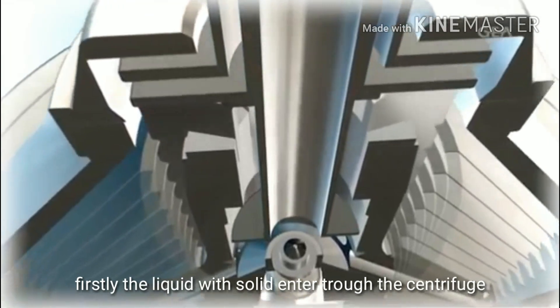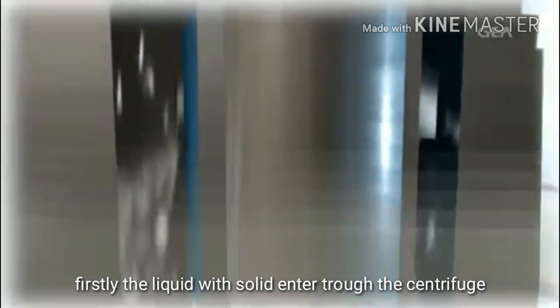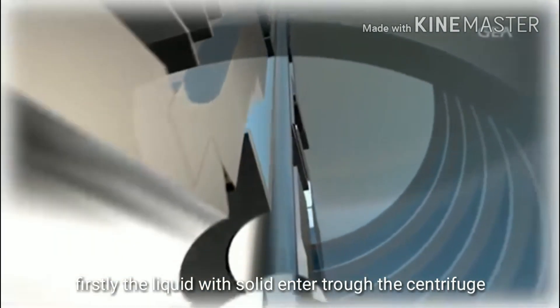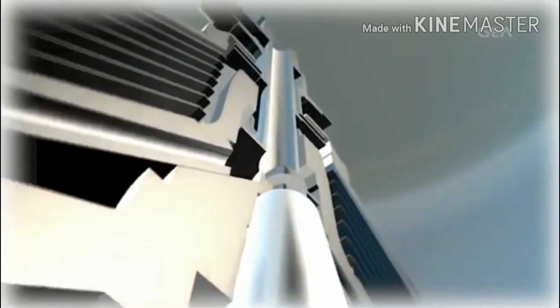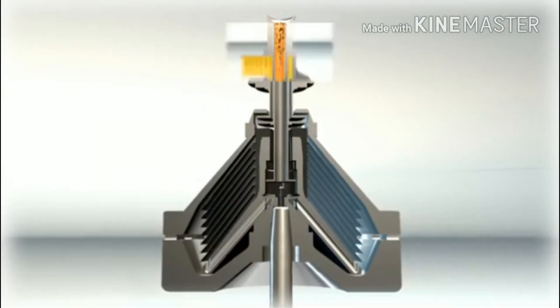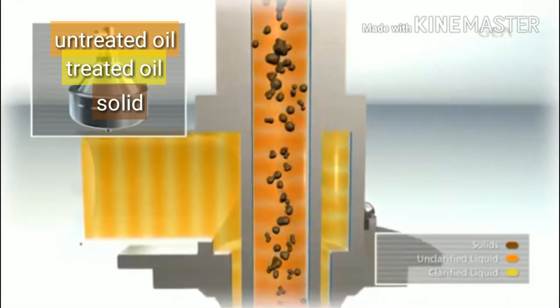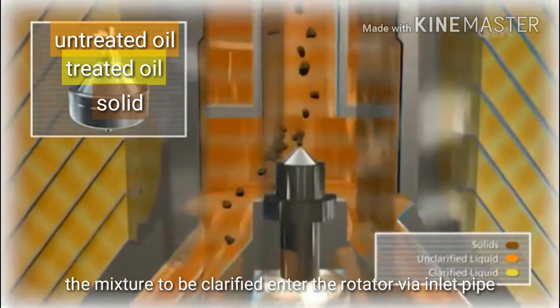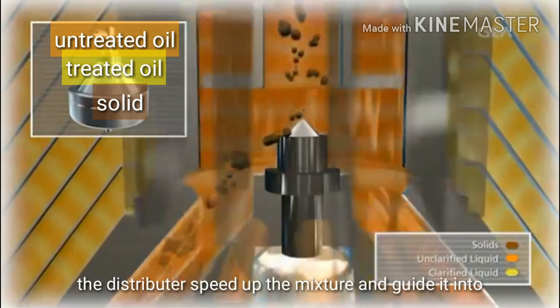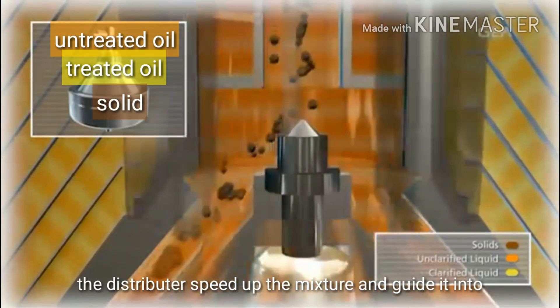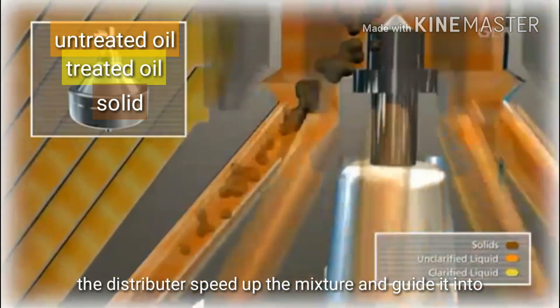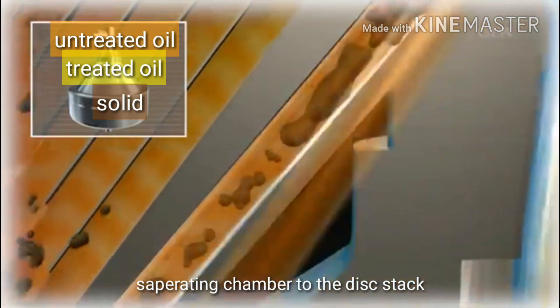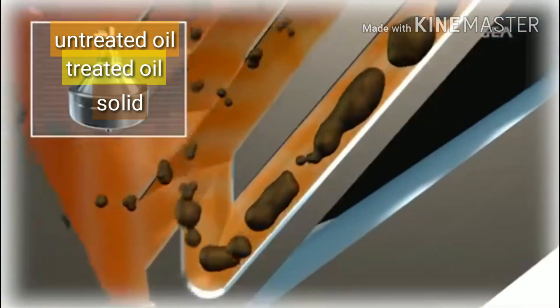In order to understand the entire function of a separator, we simply have to follow the path of a liquid loaded with solids through the centrifuge. The mixture to be clarified enters the rotator via a centrally positioned inlet pipe. The distributor speeds up the product and guides it into the separating chamber, the disc stack. This is where the actual separation of the solids and liquids takes place.